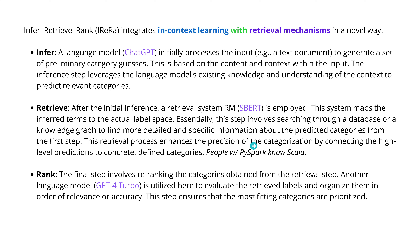For example, people with high Spark knowledge also know how to code Scala — because both come from a company called Databricks; Scala was the original language, then they extended it with PySpark applications. I can find this in a knowledge graph. Then we re-rank: the final step uses GPT-4 Turbo to evaluate the retrieved labels and organize them by relevance or accuracy, ensuring the most fitting categories are prioritized with a clear winner, second, third.